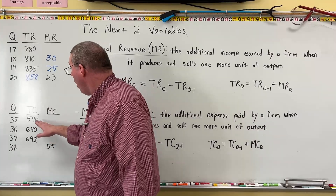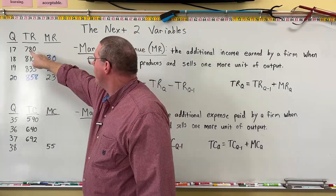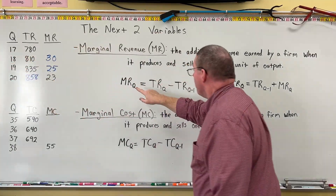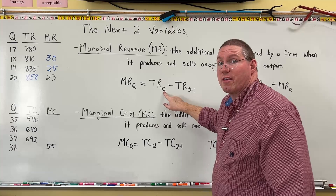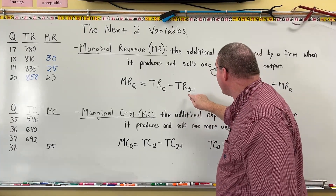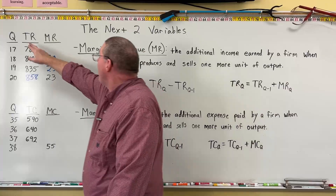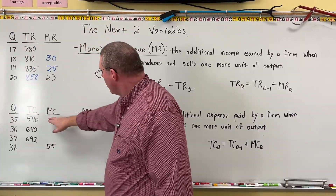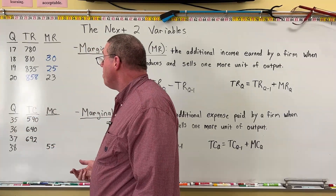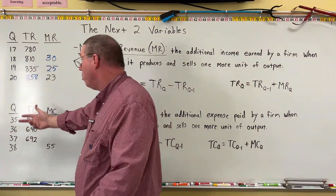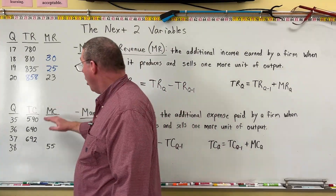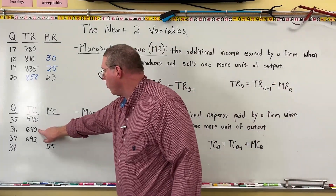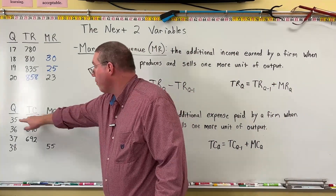You may ask: how come we didn't find the marginal revenue for the 17th unit? To find marginal revenue for the 17th unit, we'd need total revenue for 17 and total revenue for 16. We don't have the total revenue for 16 — it's not on the table. Same thing here: we can't find marginal cost for 35 because we'd need total cost for 34, which we don't have. So we have to start with marginal cost of 36.